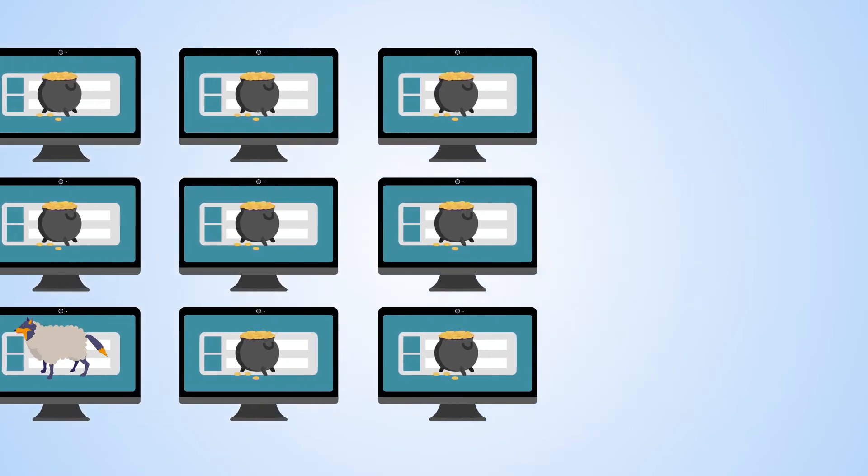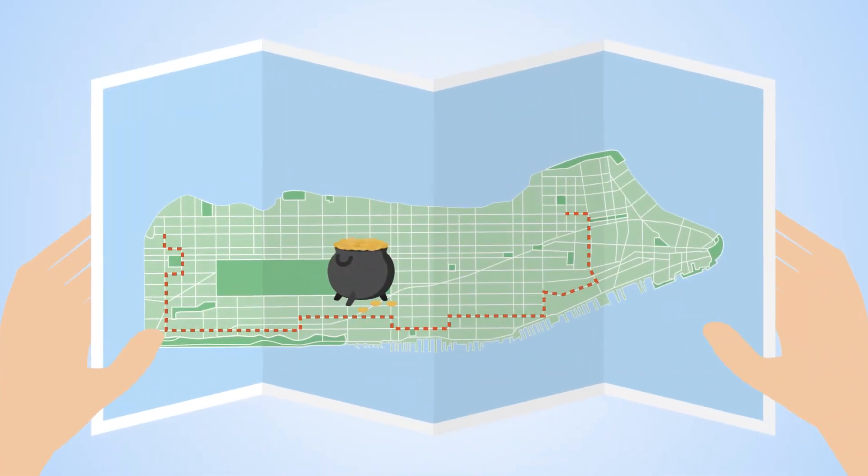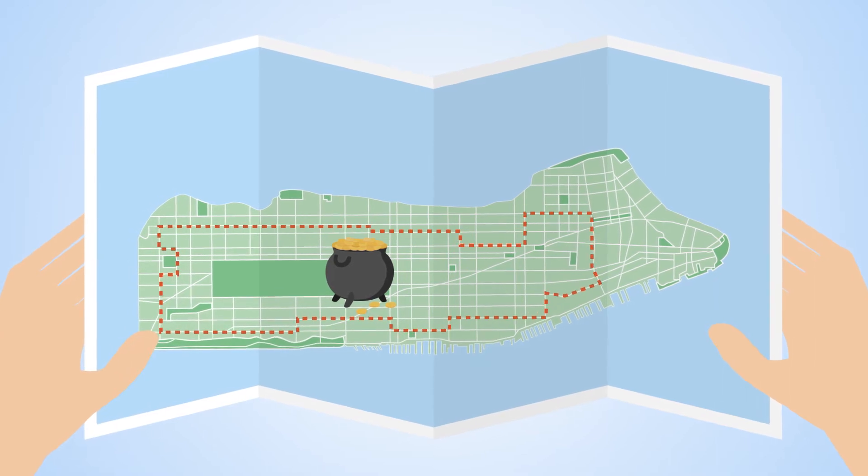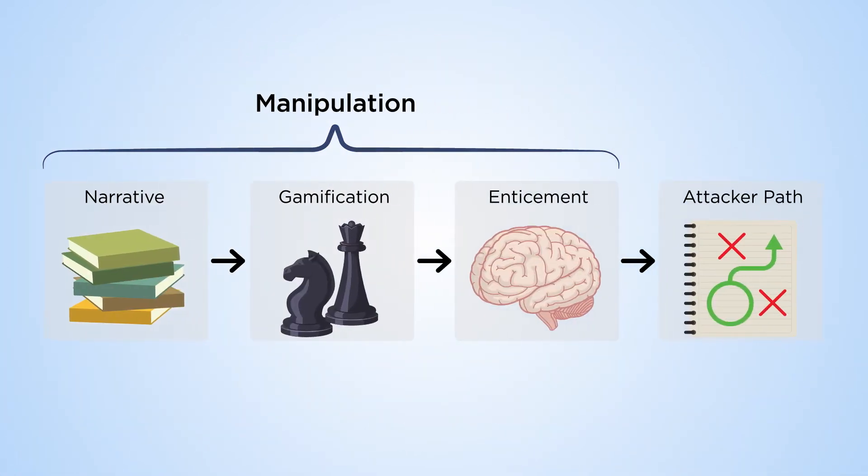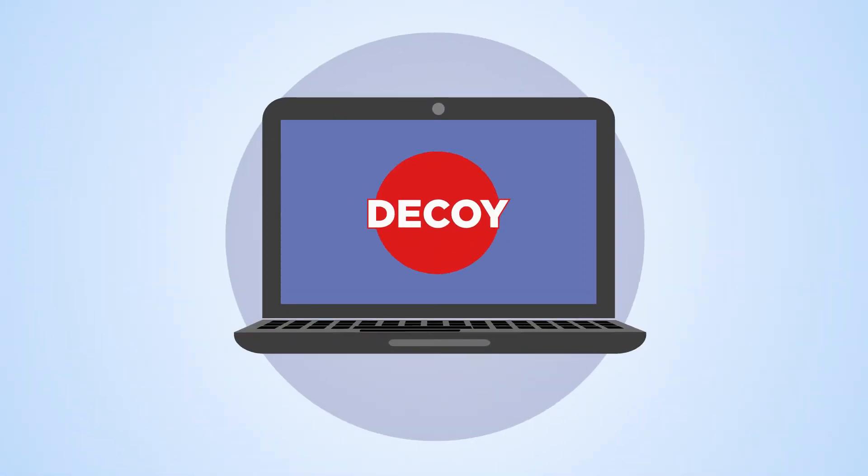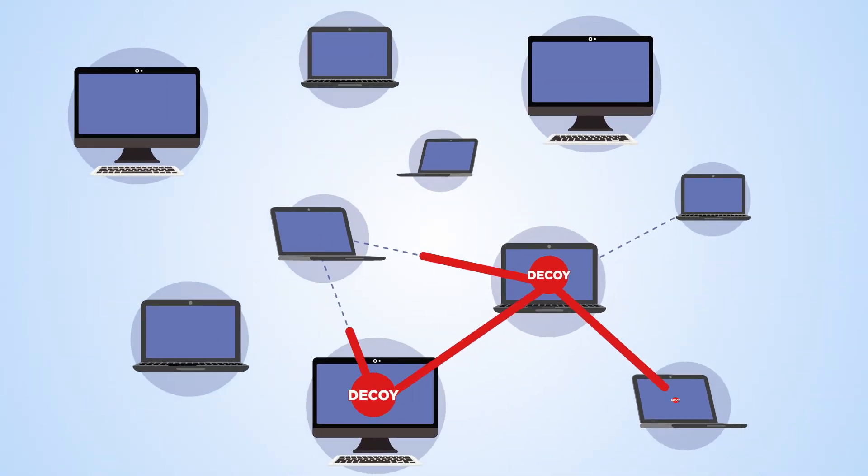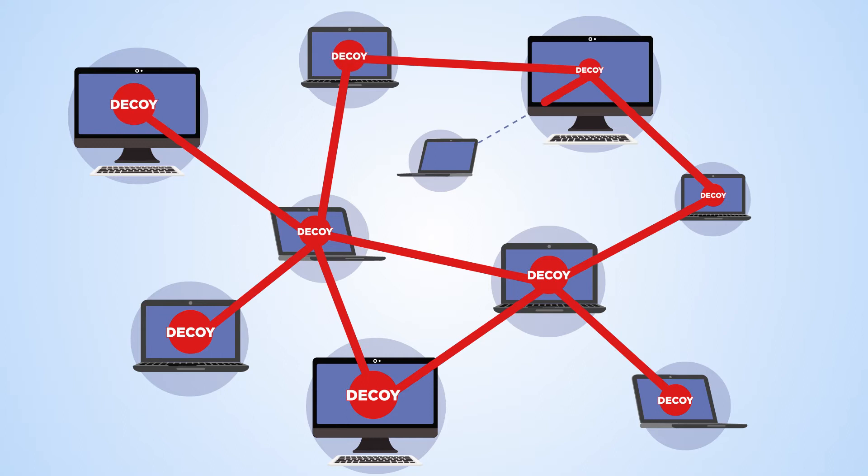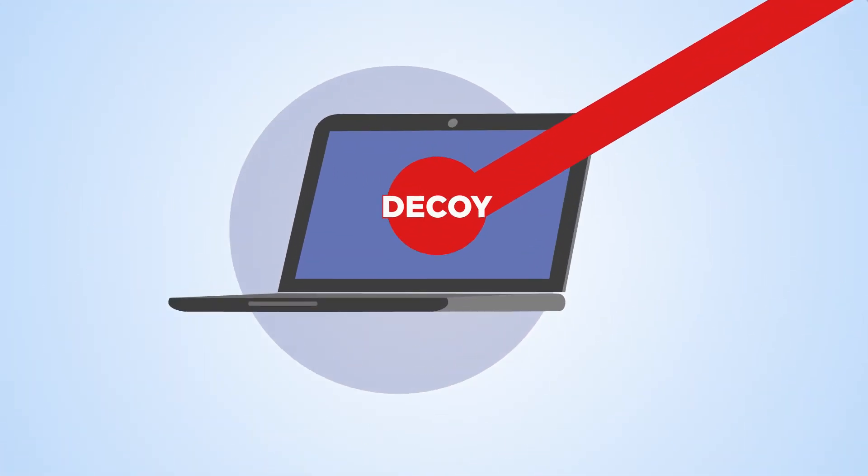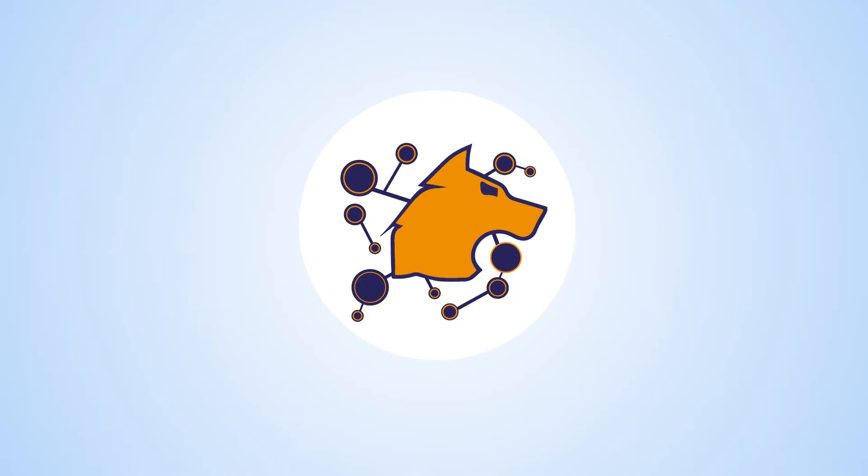The attacker path is the path through the network chosen by the hacker to access valuable assets. The manipulation is created dynamically as the attacker moves through the network, ensuring that engagement is extended to a point where the optimum countermeasure can be employed to arrest the attack.